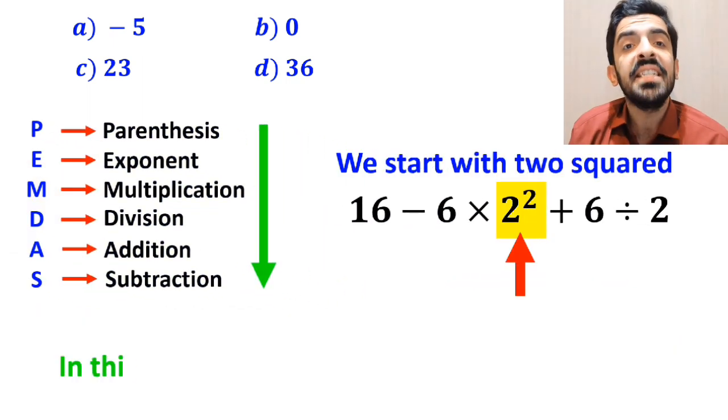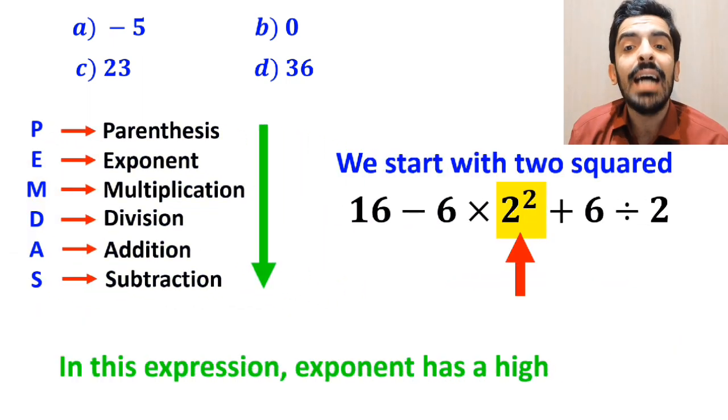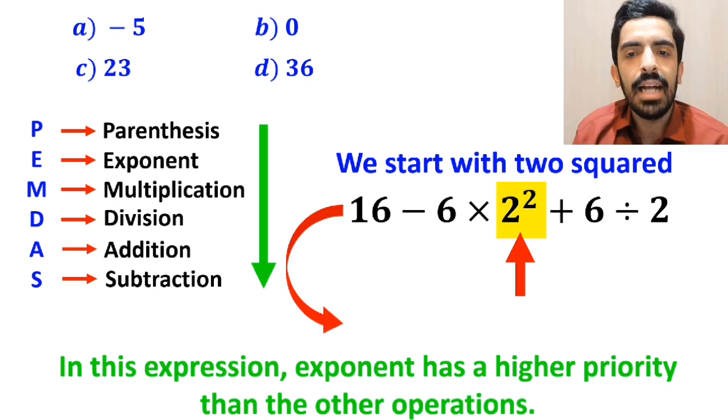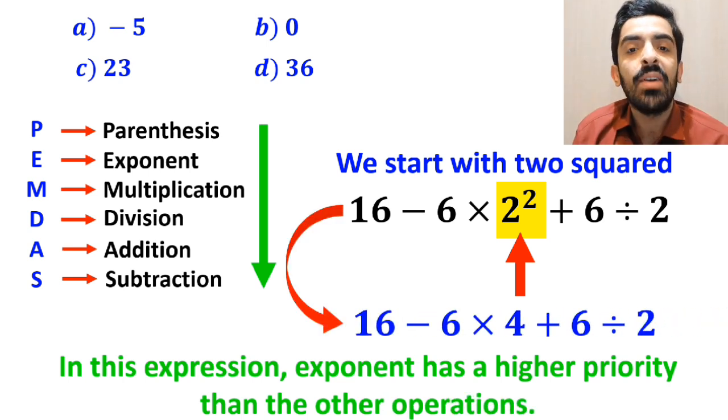Okay, first we start with 2 squared, because in this expression, exponent has a higher priority than the other operations. So, instead of the original expression, we can write 16 minus 6 times 4 plus 6 divided by 2.